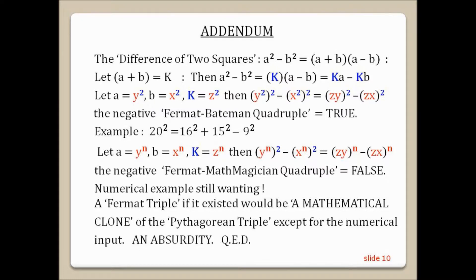Let a equal y squared, b equal x squared, k equals z squared. Then y squared squared minus x squared squared equals zy squared minus zx squared. The negative Fermat-Bateman quadruple equals true. Example: 20 squared equals 16 squared plus 15 squared minus 9 squared.